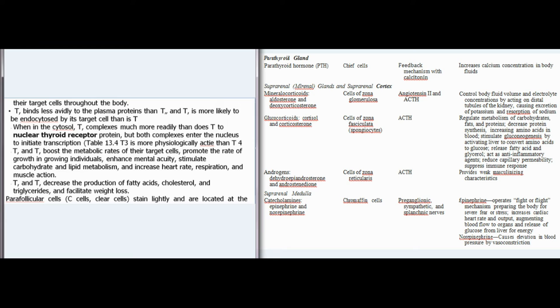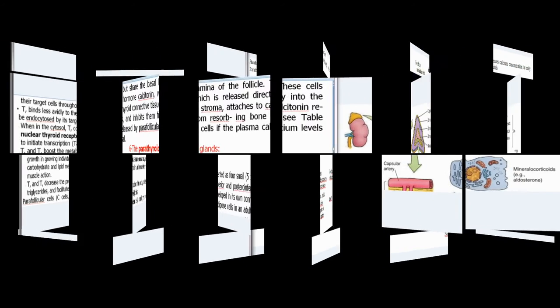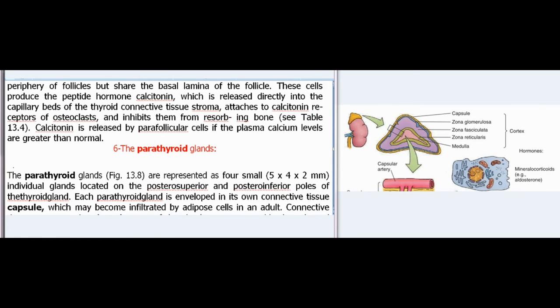Parafollicular cells (C cells, clear cells) stain lightly and are located at the periphery of follicles, sharing the basal lamina of the follicle. These cells produce the peptide hormone calcitonin, which is released directly into the capillary beds of the thyroid connective tissue stroma, attaches to calcitonin receptors of osteoclasts, and inhibits them from resorbing bone (Table 13.4). Calcitonin is released by parafollicular cells when plasma calcium levels are greater than normal.